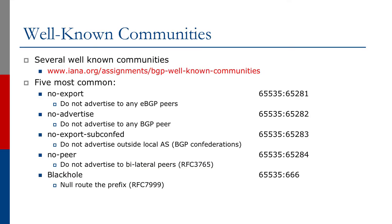I've got a short example to show how it works. The final one is the blackhole community — the most recently defined well-known community, RFC 7999 — and this is to null-route a prefix. If the prefix is announced to a neighbor with the blackhole community set, it tells the neighbor to null-route any traffic to that prefix. It's extremely useful for the remote triggered black hole filtering BGP security feature that is widely used on the internet today to help defeat denial of service attacks.